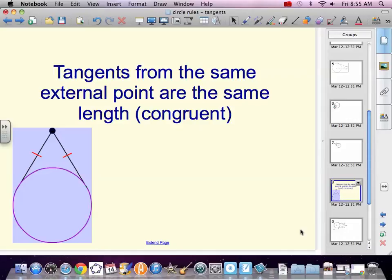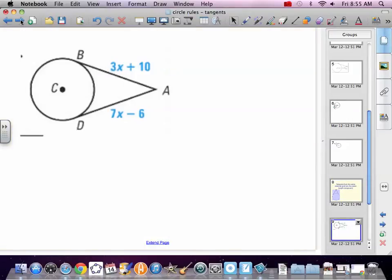All right, so we have another rule of circles dealing with tangents. Tangents from the same external point, if they're tangent to the same circle, they are the same length. They are congruent. So we're going to be told that AB and AD are tangent to circle C. It means they hit circle C each at one point. AB hits at B, AD hits at D.